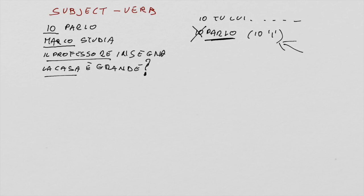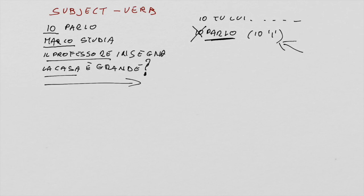So, 'la casa è grande' — having said that, Italian, unlike English, tends to reverse the subject-verb order when emphasis is desired. Let me give you a couple of examples. 'Today, you clean the room.' In Italian, you would say this when you want to mark that it's not your turn but the other person's turn to clean the room.